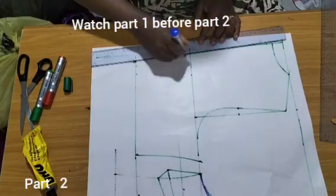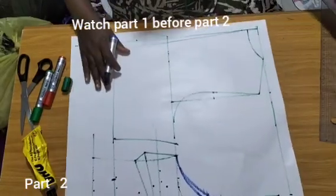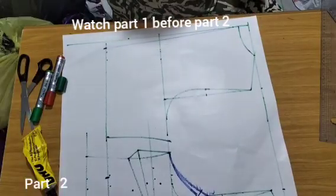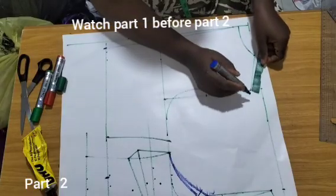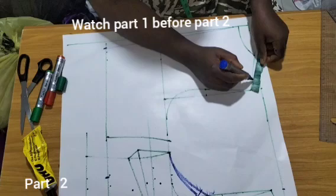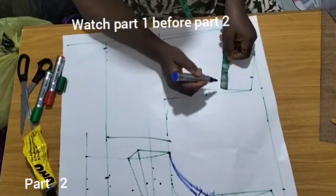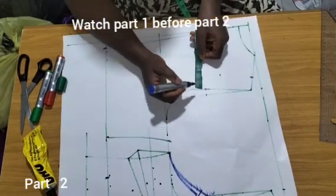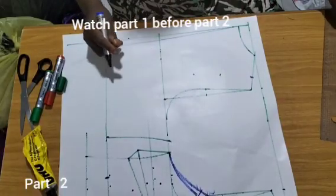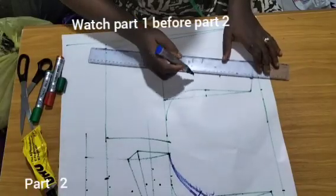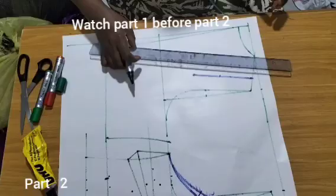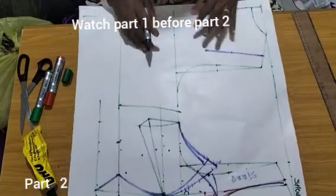I'll connect it all the way to the neckline and add my strap. The same width of strap we had at the front, 1.5 inches, we'll have at the back. This is my strap line, and it will guide what my neckline is going to be.